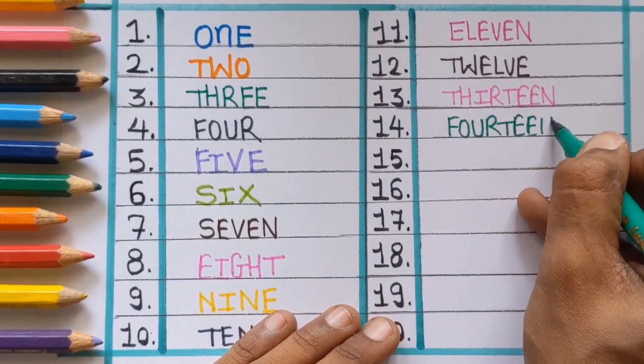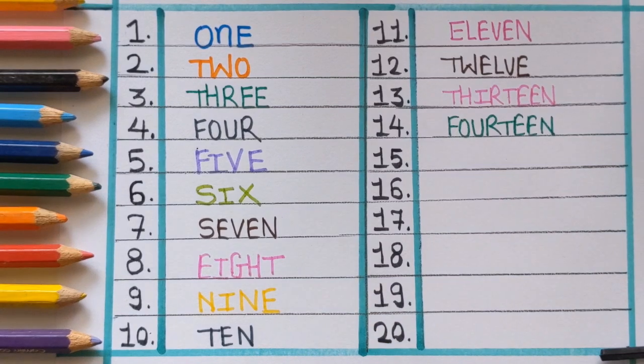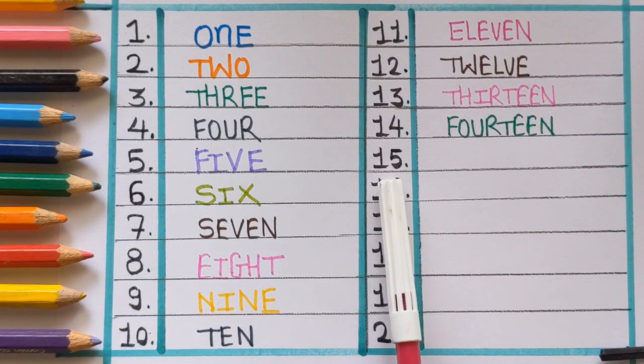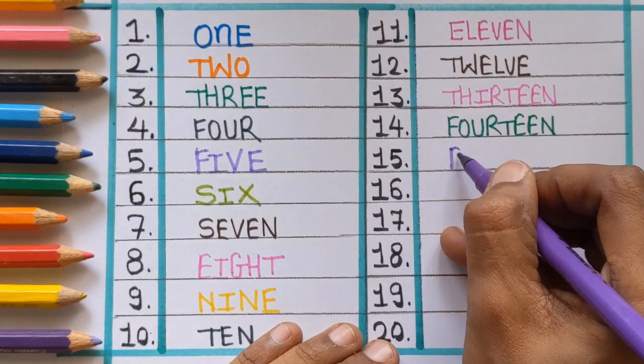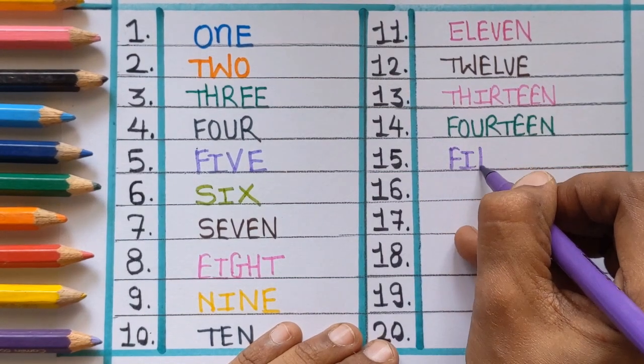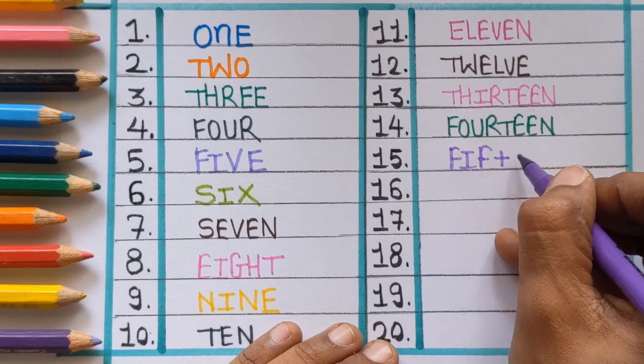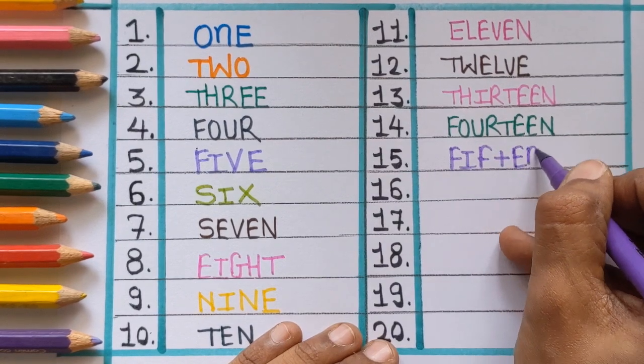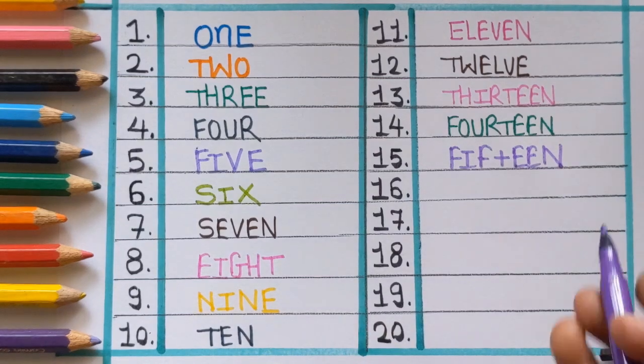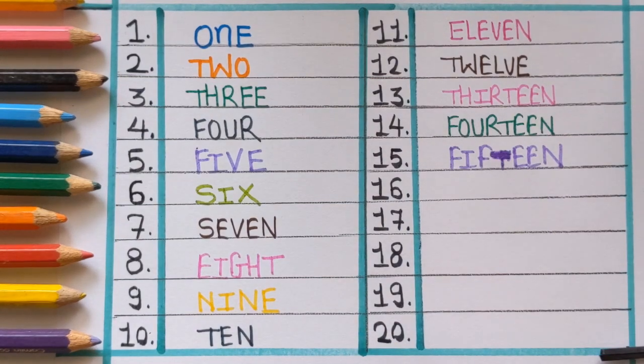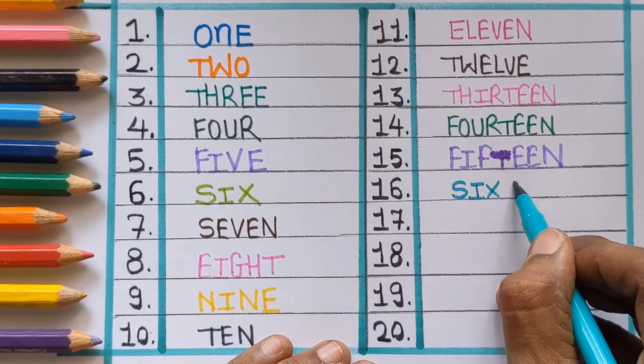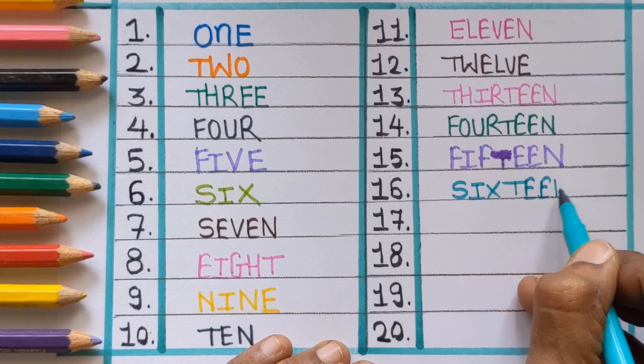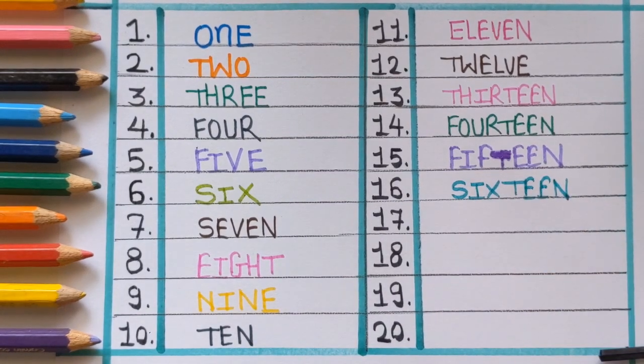Fourteen, F-O-U-R-T-double E-N, fourteen. After fourteen, which number is this? Number fifteen, F-I-F-T-double E-N, fifteen. Next number is sixteen, S-I-X-T-double E-N, sixteen.